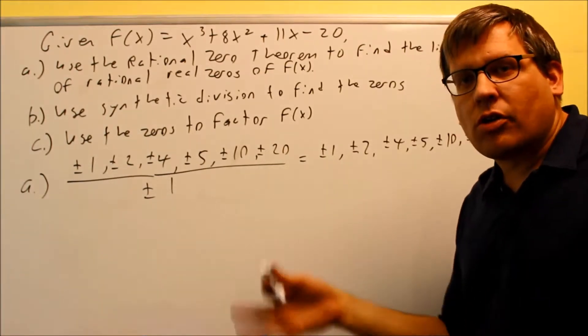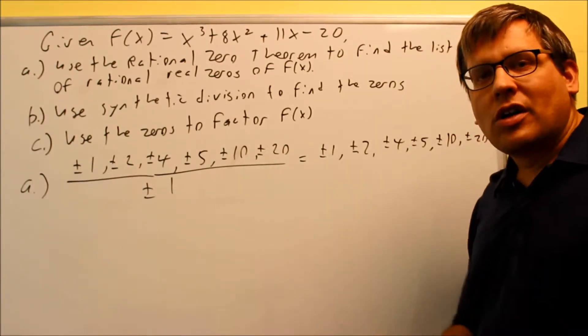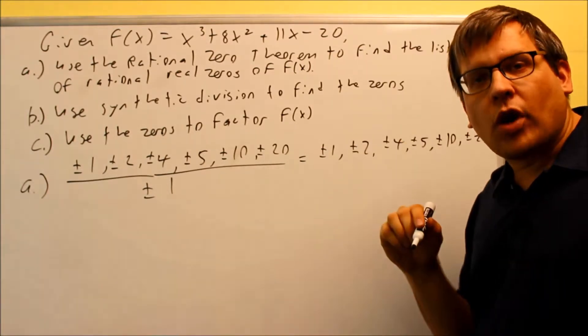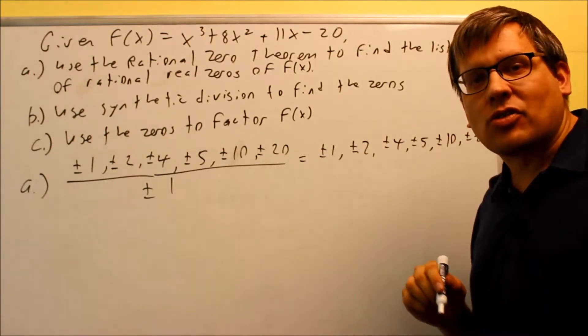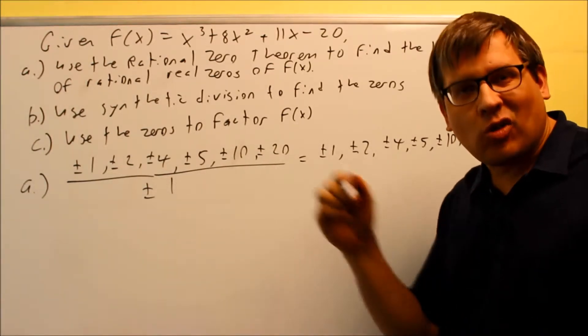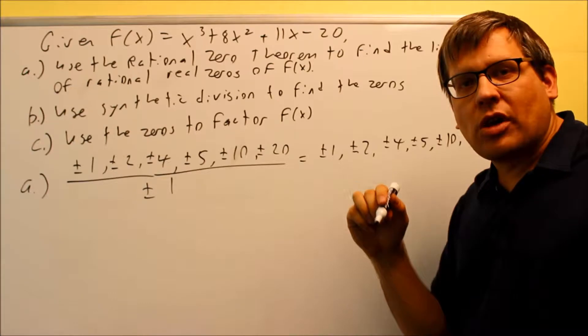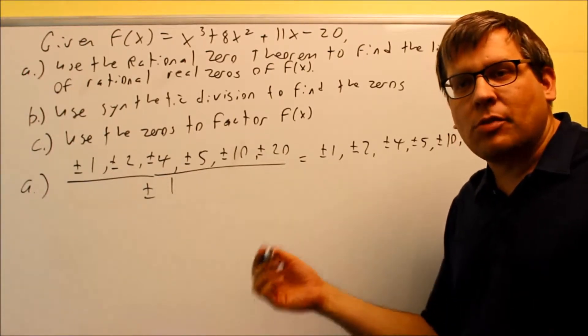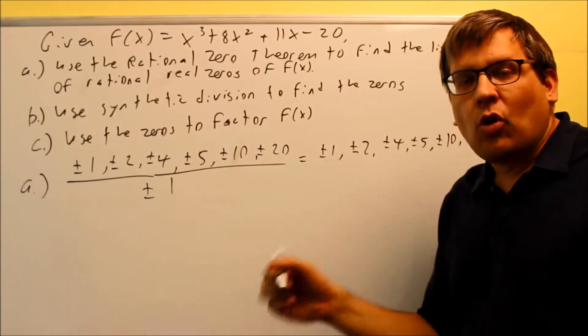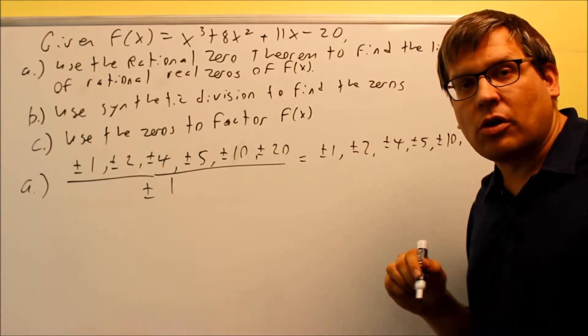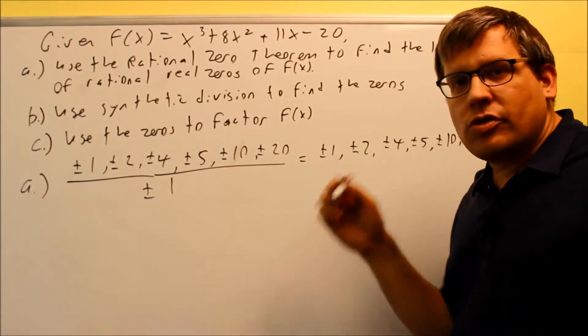Now how do you find that number? A couple different ways. First of all if you have a graphing calculator you can graph this and you can see where one number where it crosses the x-axis. You probably want to look for one where it crosses at a whole number. You don't want to do one where it's kind of in between two lines because then it might be a fraction and you may not be able to know accurately what that fraction actually is. So you probably want to go for one where it crosses at a whole number or integer.